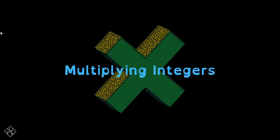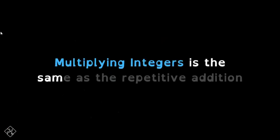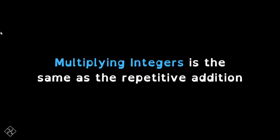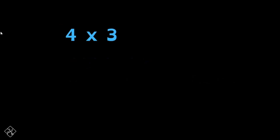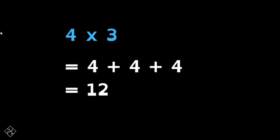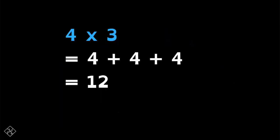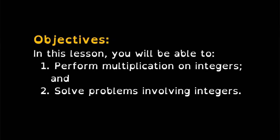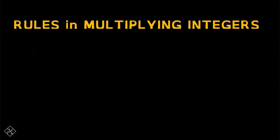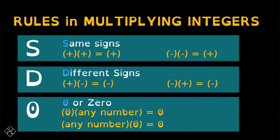The multiplication of integers is a basic operation performed on integers. Multiplication of integers is the same as repetitive addition — adding an integer a specific number of times. For example, 4 times 3 means adding 4 three times: 4 plus 4 plus 4 is equal to 12. Let us learn more about the multiplication of integers. You will be able to perform multiplication on integers and also solve problems involving integers. We have rules in multiplying integers — S, D, and O — tatlong bagay na kailangan natin matandaan bago tayo mag-multiply ng integers.